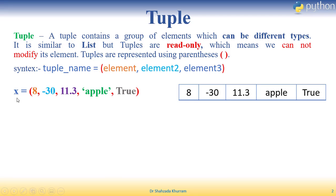Example lete hain. X ek variable hai jise maine tuple ke tor pe liya hai. Assignment operator hai, parenthesis start kiya. Phir 8 likha — yeh integer hai. Phir minus 30 — woh bhi integer. Phir 11.3 — yeh floating value hai. Phir quotes ke andar 'apple' — yeh string hai. Phir true — yeh boolean value hai. Parentheses close kar diya. Is tarah hum log tuple create kar sakte hain Python ke andar.